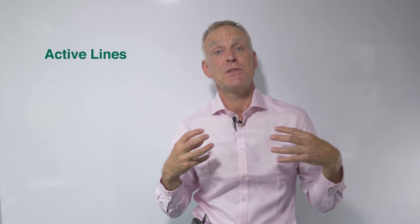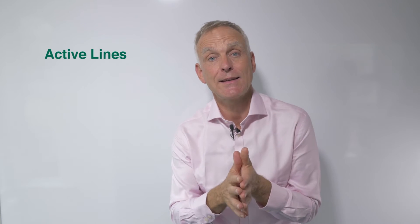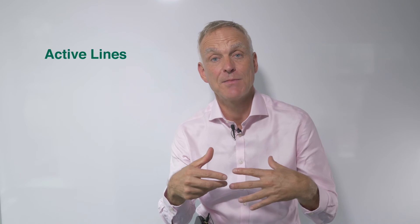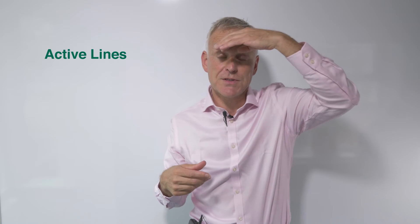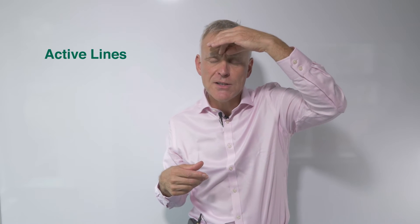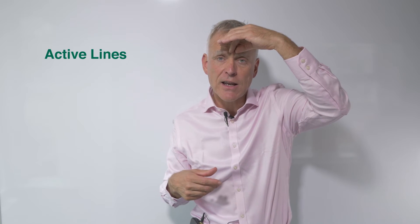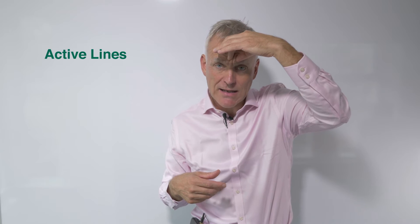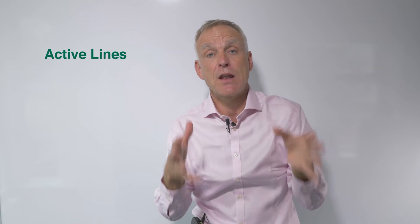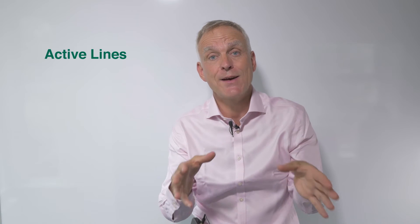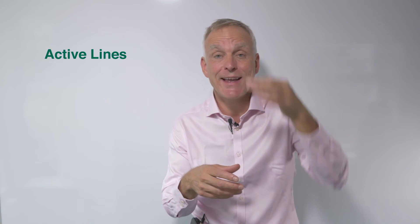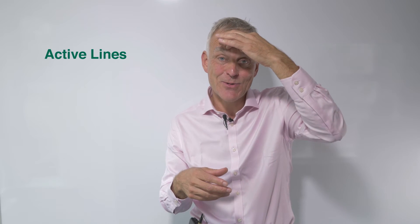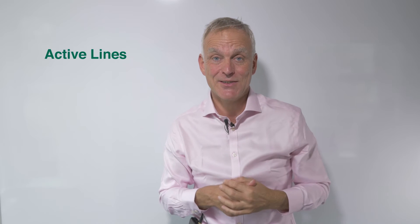Active lines are generally treated by weakening the overactive muscle. For instance, someone who's got a really strong frown line — that's caused by muscle activity. The logical way of reducing it is to reduce the muscle activity.